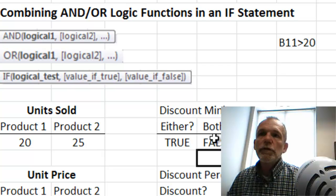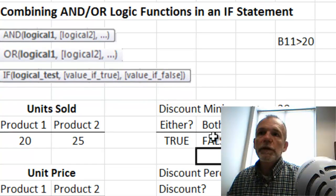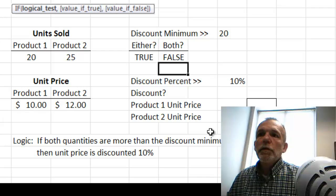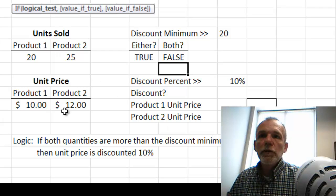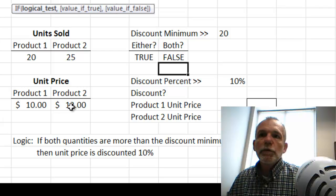So the AND and OR are good useful functions for evaluating some different conditions. Now suppose what we have is a situation where we have, for these two products, some unit prices of 10 and 12 dollars.